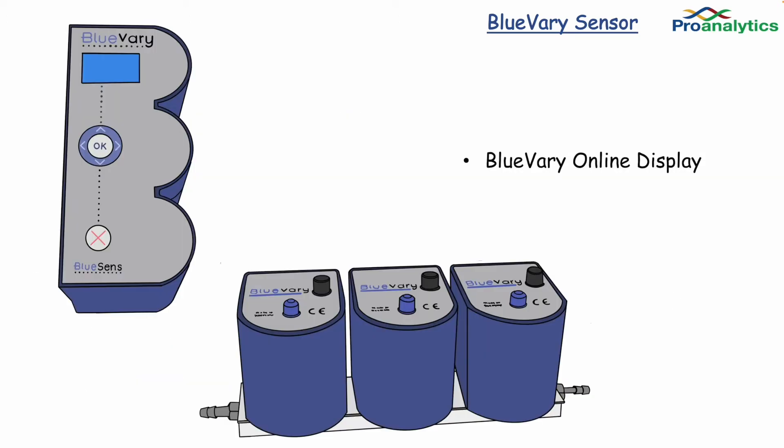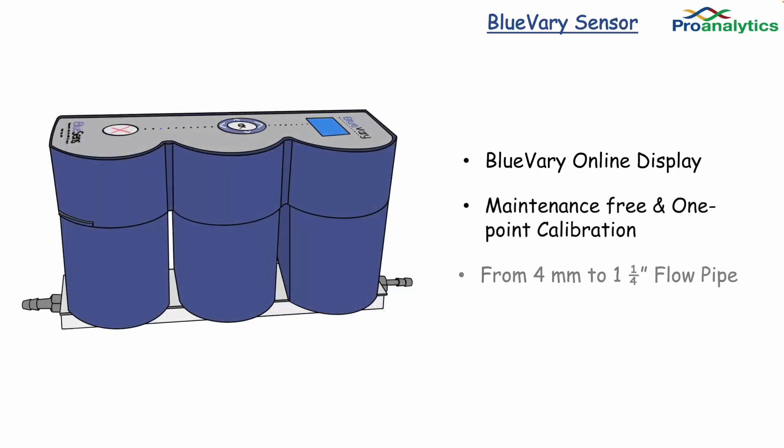The BlueVary display unit fits over the cartridges, allowing for visual readings during the run. Depending on the application, gas sensor cartridges can be chosen and exchanged with minimal effort. The BlueVary is designed to be maintenance-free due to exchangeable cartridges — just change on a yearly basis.